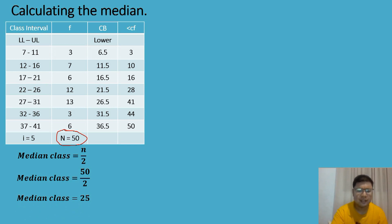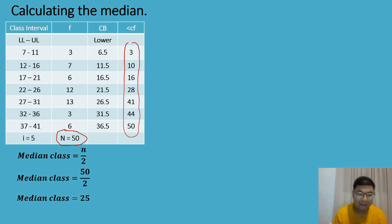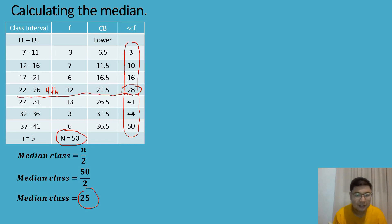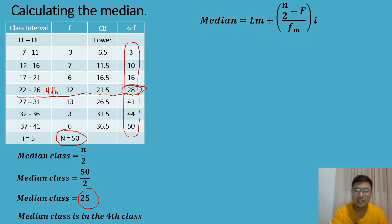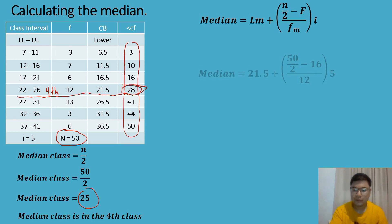To get the median class, the cumulative frequency must be equal to or greater than 25. Looking at the cumulative frequency values, we find the number equal to or greater than 25, which is 28. So our median class is in the fourth class. The next step is to use the formula: median is equal to the lower boundary of the median class plus the quantity of total number of frequency over 2, minus the cumulative frequency before the median class, all over the frequency of the median class times the class width.